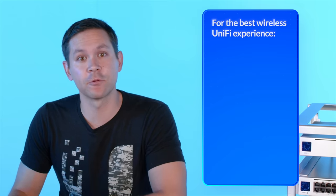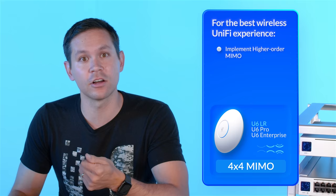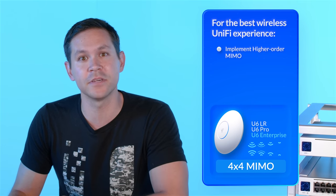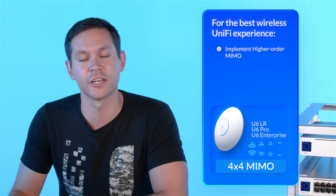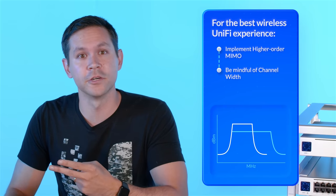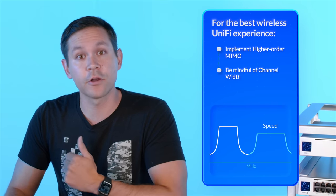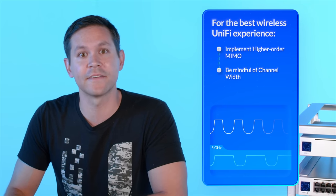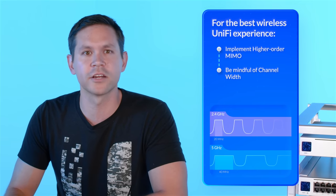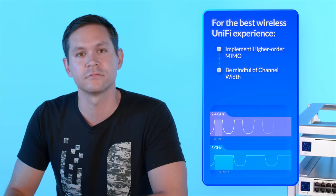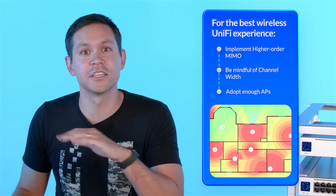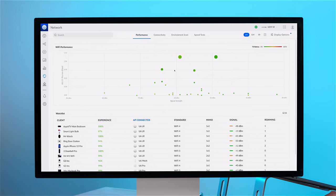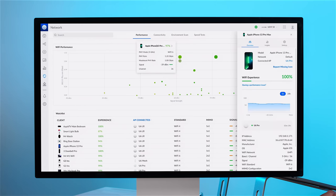To give your UniFi network the best wireless experience, we recommend a few things. Implementing higher order MIMO — our U6 LR, U6 Pro, and U6 Enterprise APs all have 4x4 MIMO configurations. Being mindful of your channel width: wider channels can maximize speed, while narrower channels provide greater stability. As such, 5 GHz radios in UniFi APs have a default channel width of 40 MHz, and 20 MHz for 2.4 GHz radios. Finally, adopting enough APs to ensure all your devices have a strong signal — the Wi-Fi Insights tab in your UniFi network application can quickly give you an idea of where you need to deploy more APs.